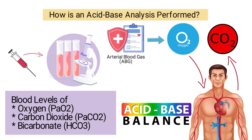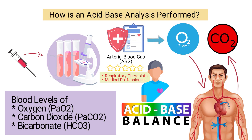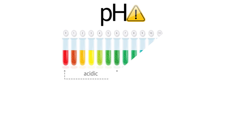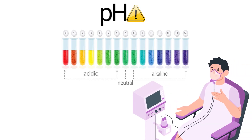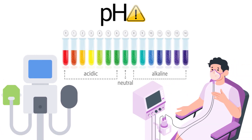The ABG also looks at how well carbon dioxide is being removed. ABG interpretation is a very important skill for respiratory therapists and medical professionals because it helps with the assessment of the patient's acid-base balance. If the pH is outside of the normal range, the patient may require other interventions such as oxygen therapy or mechanical ventilation.